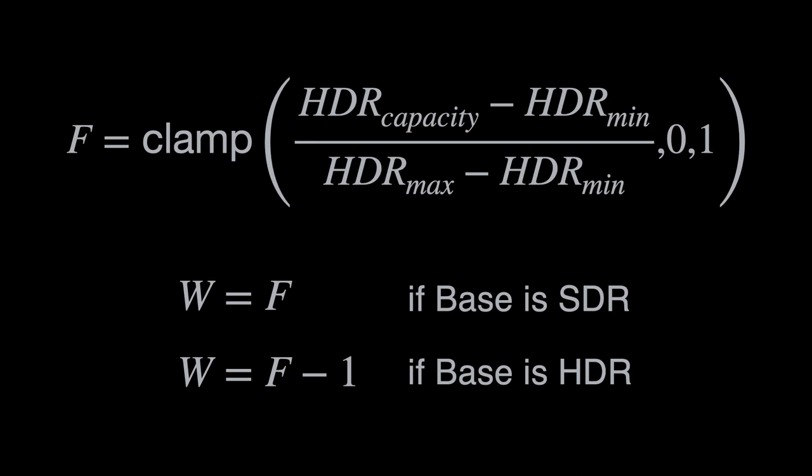Now if the base rendition is SDR, then we set the weight parameter w to be equal to f—a continuous value between 0 and 1, where 0 means don't apply the gain map at all, and 1 means apply the gain map completely.